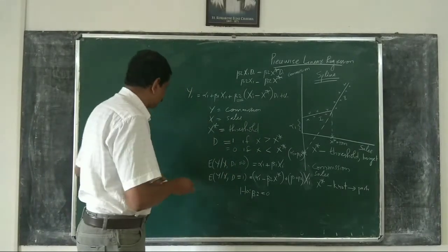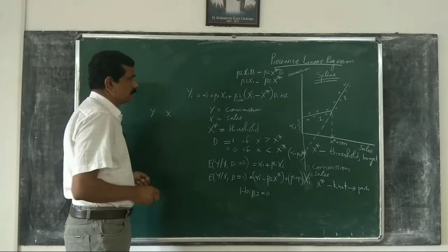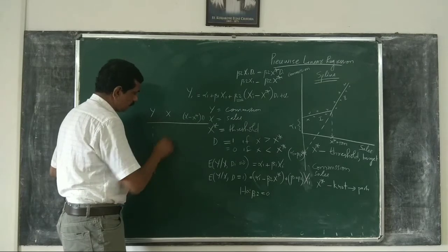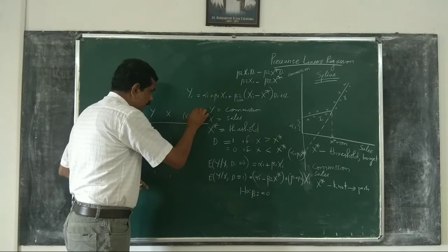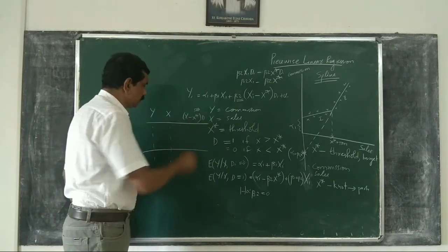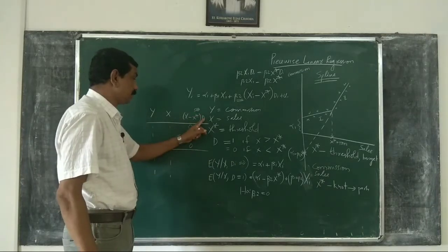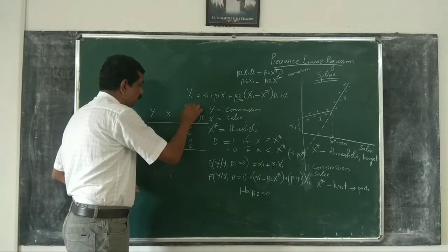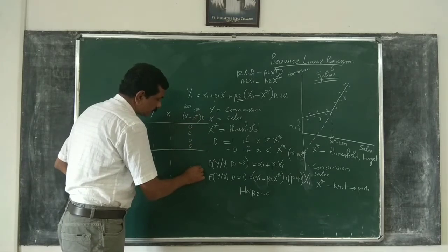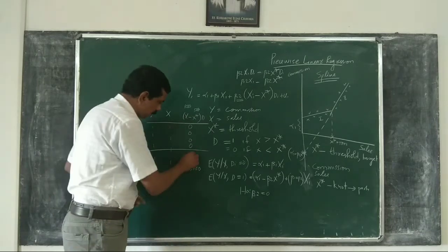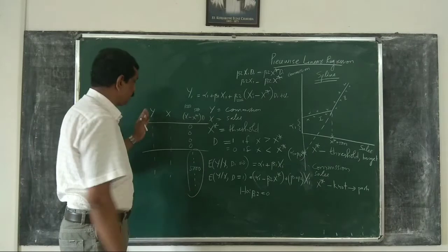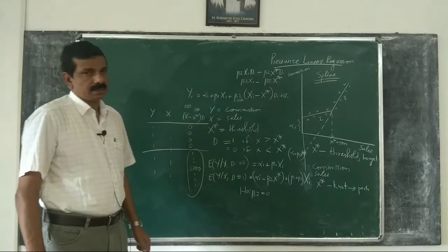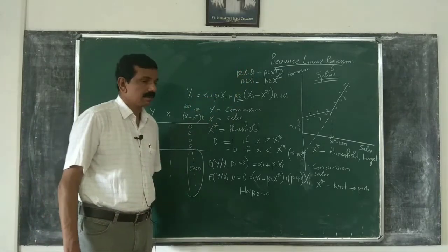When you construct the data, the variables are y, x, and (x − x*)·d. For example, if x* is 5000, for observations where d = 0, the interaction column contains all zeros. Where d = 1, the value is x minus x*; so if x = 10,000, the entry is 10,000 − 5,000 = 5,000. You then regress y on x and the constructed variable (x − x*)·d. This is the procedure for testing piecewise linear regression.